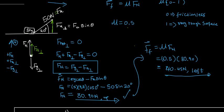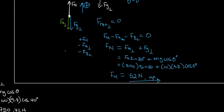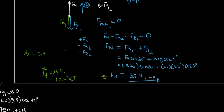Looking at another example: you've already found your normal force, so finding the frictional force is straightforward. Frictional force equals coefficient of friction times normal force. Let's say in this case the coefficient of friction is 0.4. You put 0.4 times the normal force you already found, which is 52, and that gives you a frictional force of 20.8 newtons.